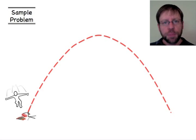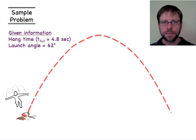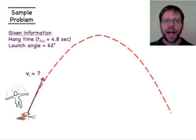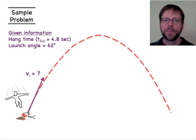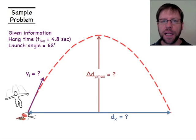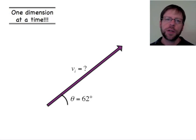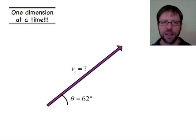For our sample problem: a projectile is launched at 62 degrees from the horizontal with a total hang time of 4.8 seconds. We want to find the initial launch velocity, the range (dx), and the maximum height at the midpoint. We'll take it one dimension at a time. First, split the initial velocity vector into components: vix equals vi times cosine(θ), and viy equals vi times sine(θ).